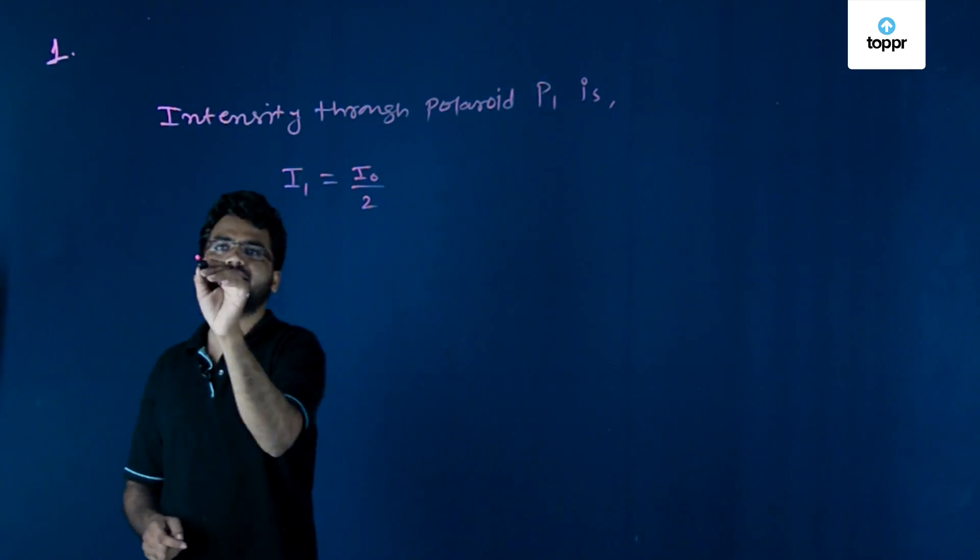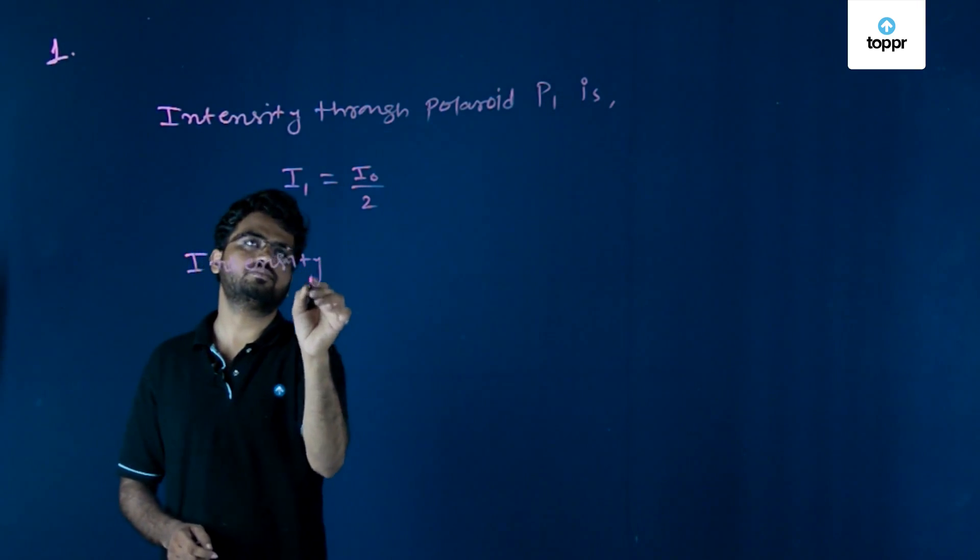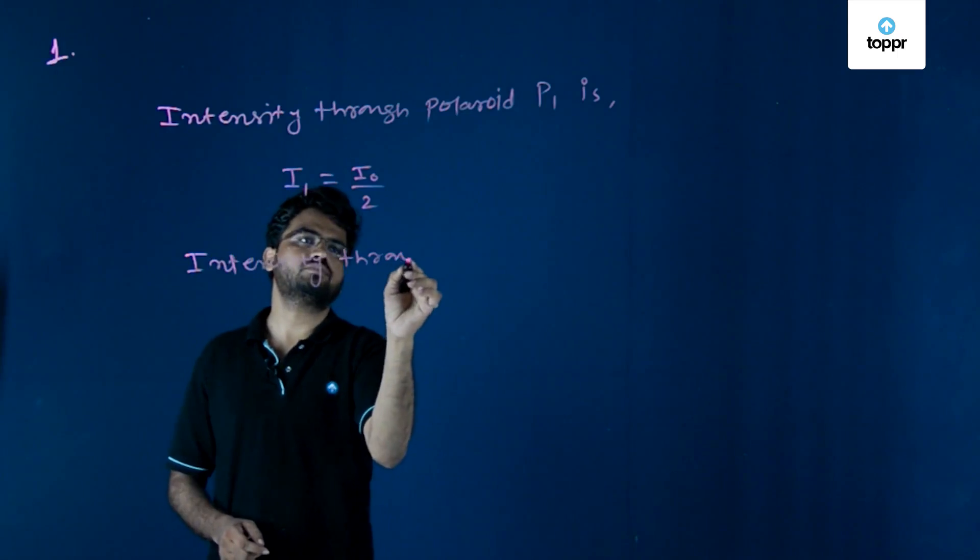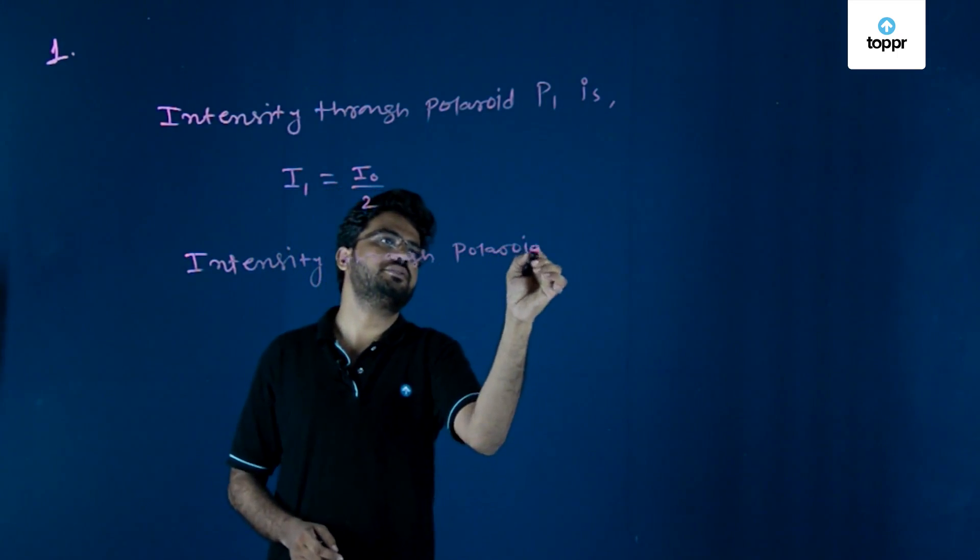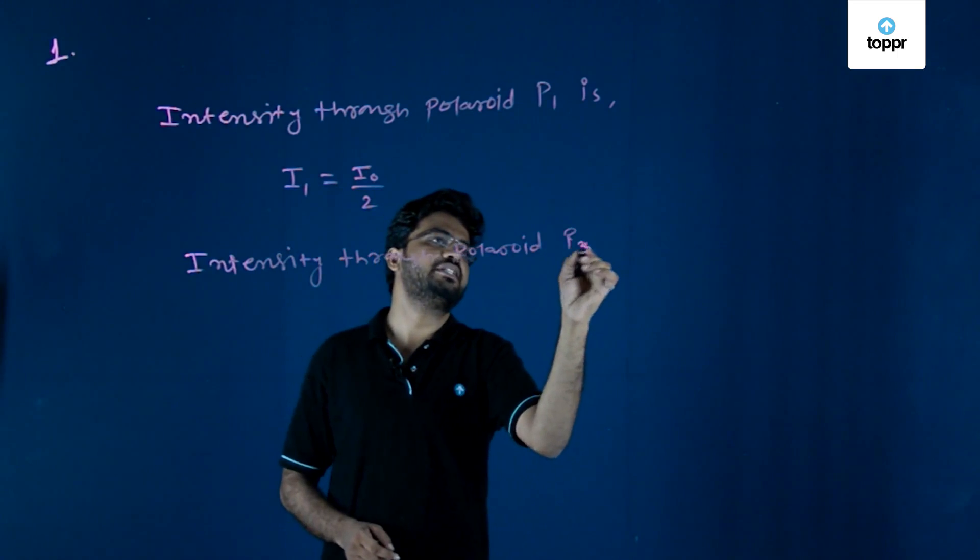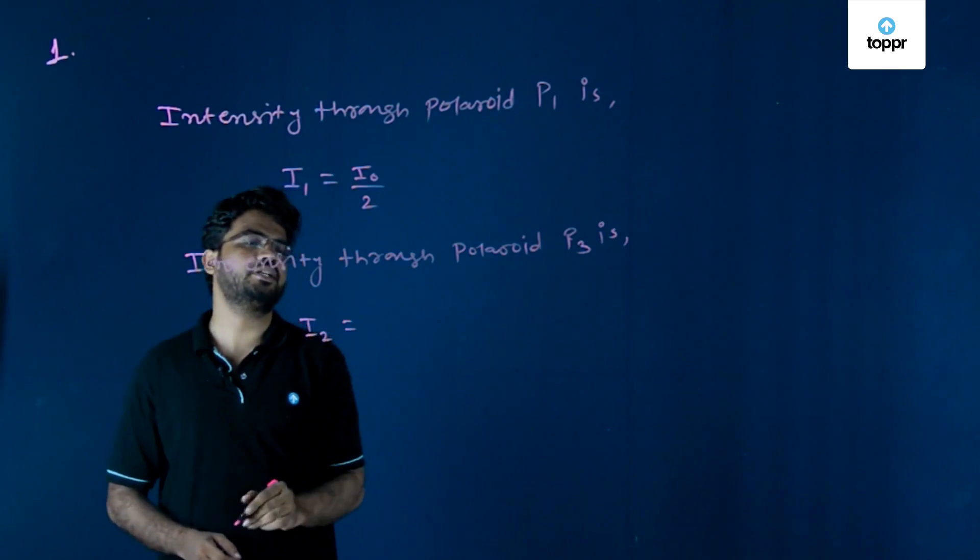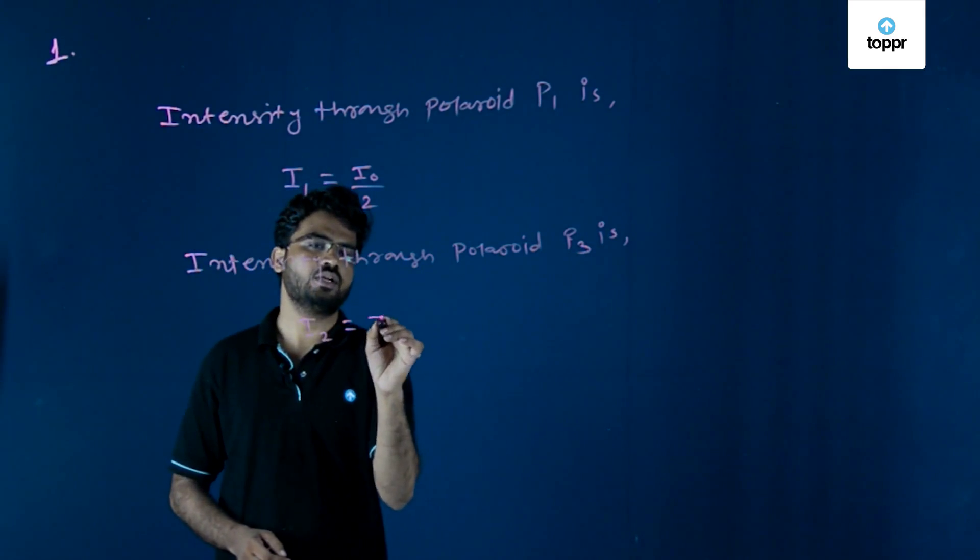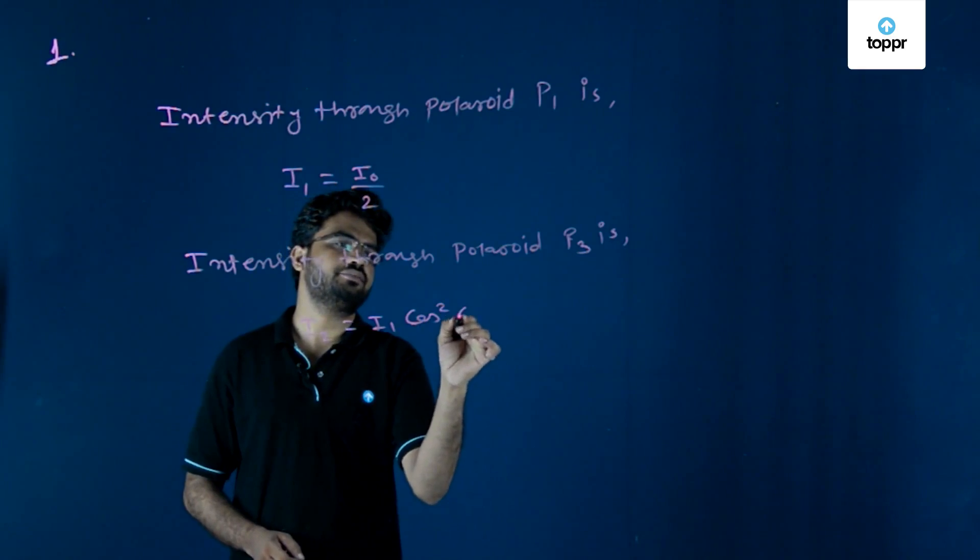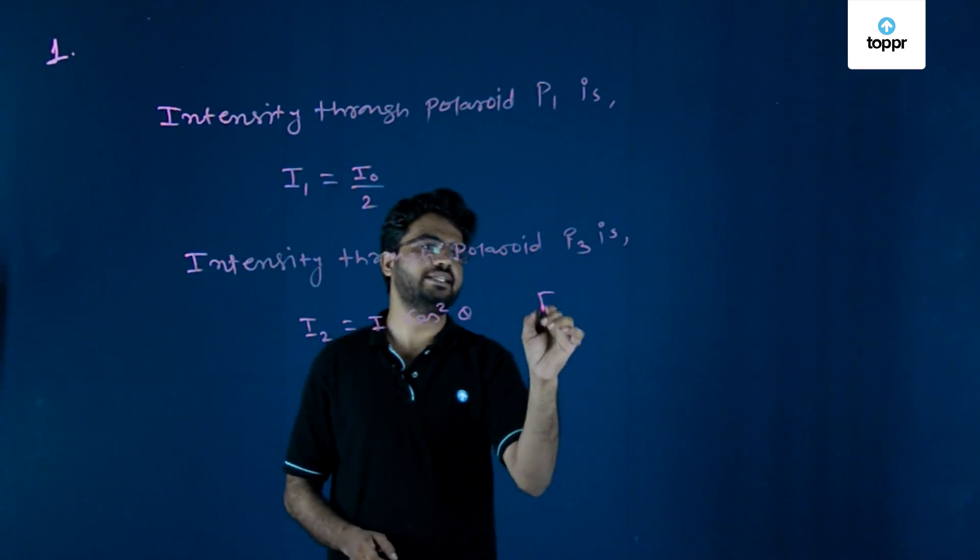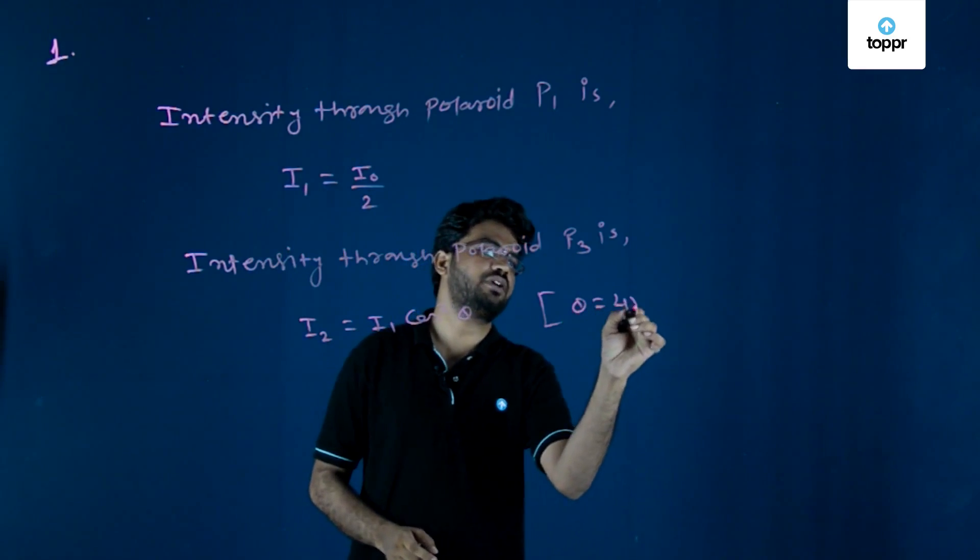Likewise, intensity through Polaroid P3 is given by I₂ equals I₁ cos²θ, and the angle between P1 and P3 is 45 degrees.